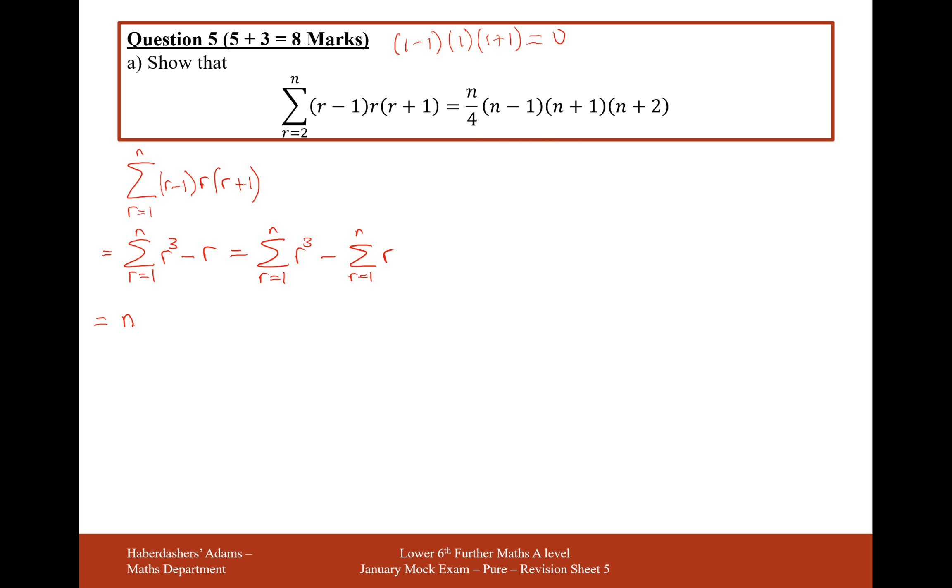So for r cubed it's going to be n squared over 4 n plus 1 squared. And then we need to take away n over 2 n plus 1.